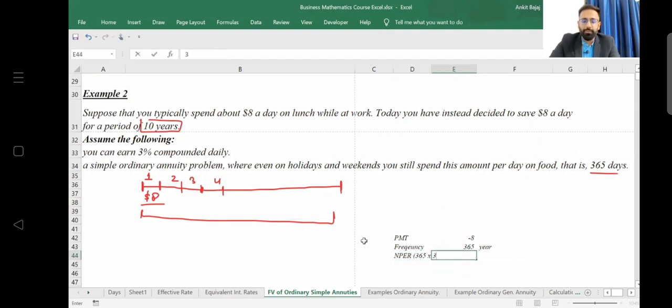So it is going to be 3,650. So NPER is going to be 3,650.